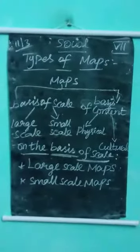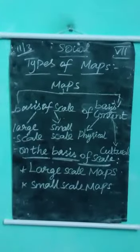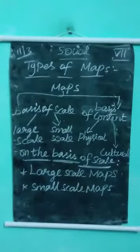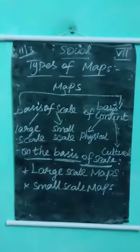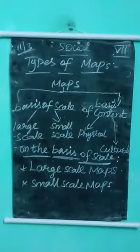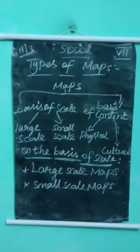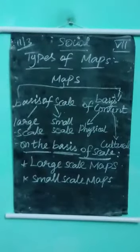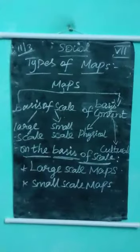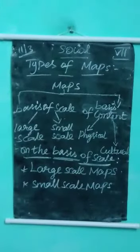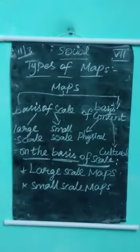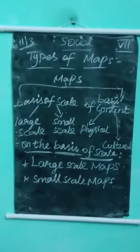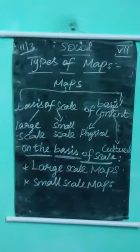There are two types of large-scale maps. The first is cadastral maps, which are village and town maps showing individual fields and house sites. The second type is topographical maps, which show a nearby small area in detail.